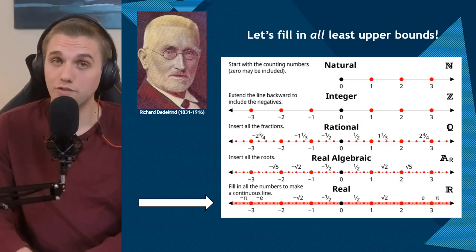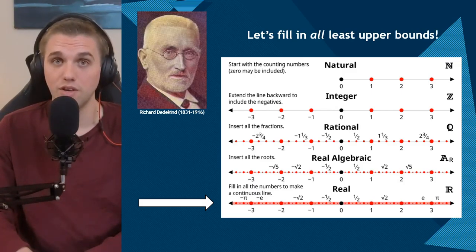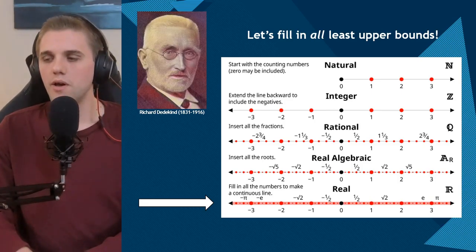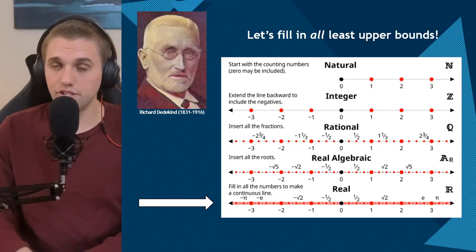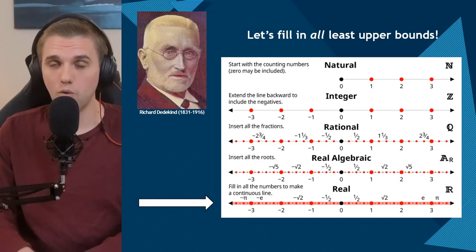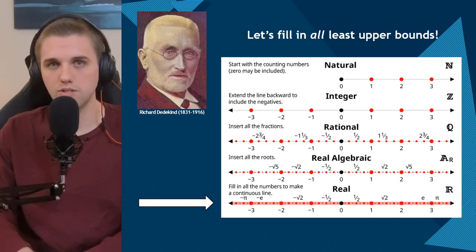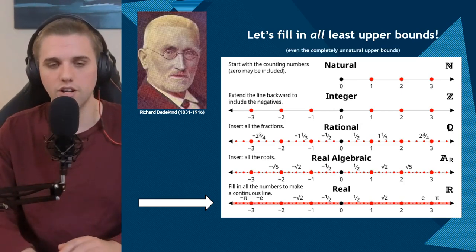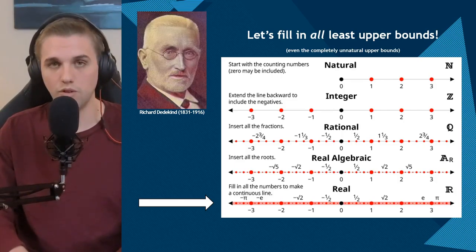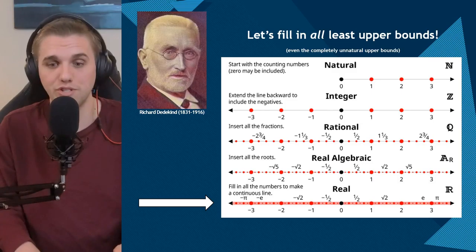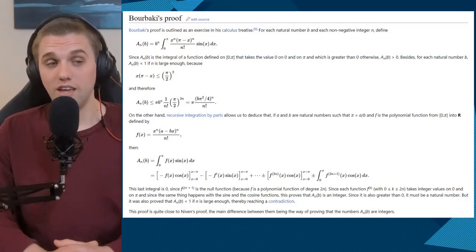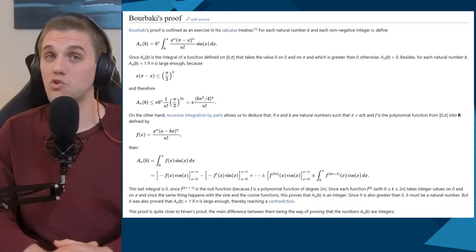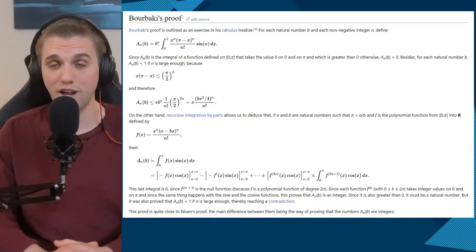I want to mention that the square root of two was a Dedekind cut that was filled, and you can prove the square root of two is irrational — it cannot be represented as a fraction. But there are a lot of irrational numbers. When I say we're going to fill all of the Dedekind cuts with least upper bounds, I mean even the completely insane ones. For example, pi is an irrational number, and proving that is incredibly challenging — this is the shortest proof I could find on Wikipedia, and there were several different proofs.